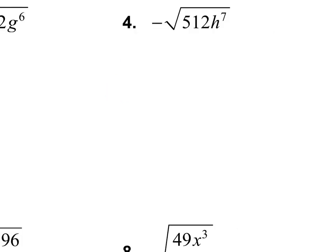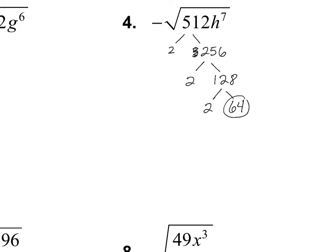Let's take a look at number 4. We have 512, which is an awfully big number. So that's going to take a little bit of time to break it down into its prime factorization. Whenever it's an even number, I always start by taking out a 2. So I can take out a 2 and we have 256. Then we take out another 2 and we have 128. Then take out another 2 and we have 64. I recognize 64 — that's a perfect square. So I'm going to go ahead and just take out the 8s. Notice I'm not going to bother breaking down 64 any further. The goal is to find my pairs, and since this is a square root I need to find groups of 2.